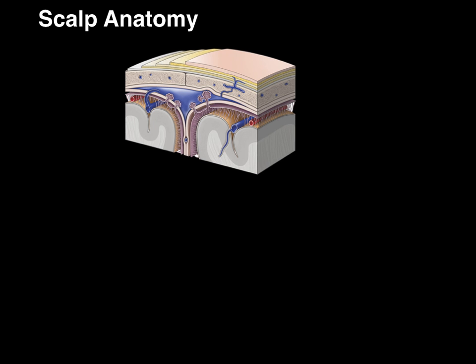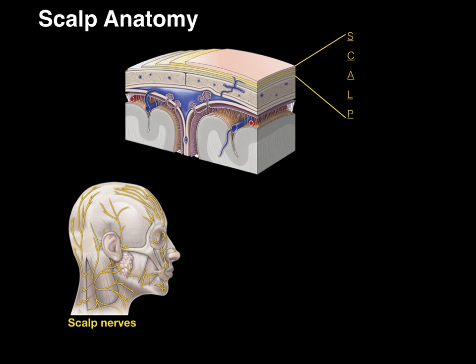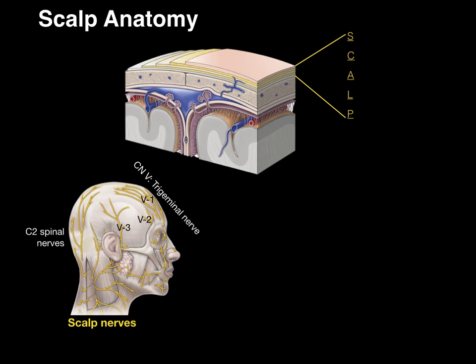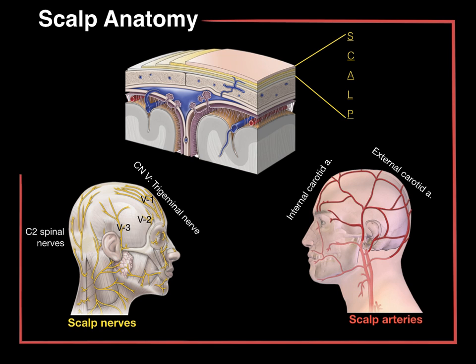In summary, scalp anatomy includes the five layers of the scalp, cutaneous nerves from C2 spinal nerve branches and from the trigeminal nerve (V1, V2, and V3), and arteries which are branches from the internal and external carotid arteries. And that, my friends, is scalp anatomy in a nutshell.